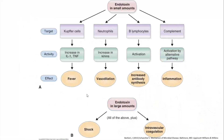In small amounts, endotoxins target many different cell types: Kupffer cells in the liver increase cytokine production; neutrophils show increased kinase activity and vasodilation; B lymphocytes show antibody production and complement activation. In larger amounts when infection is not controlled, all of the above effects plus shock and DIC occur.